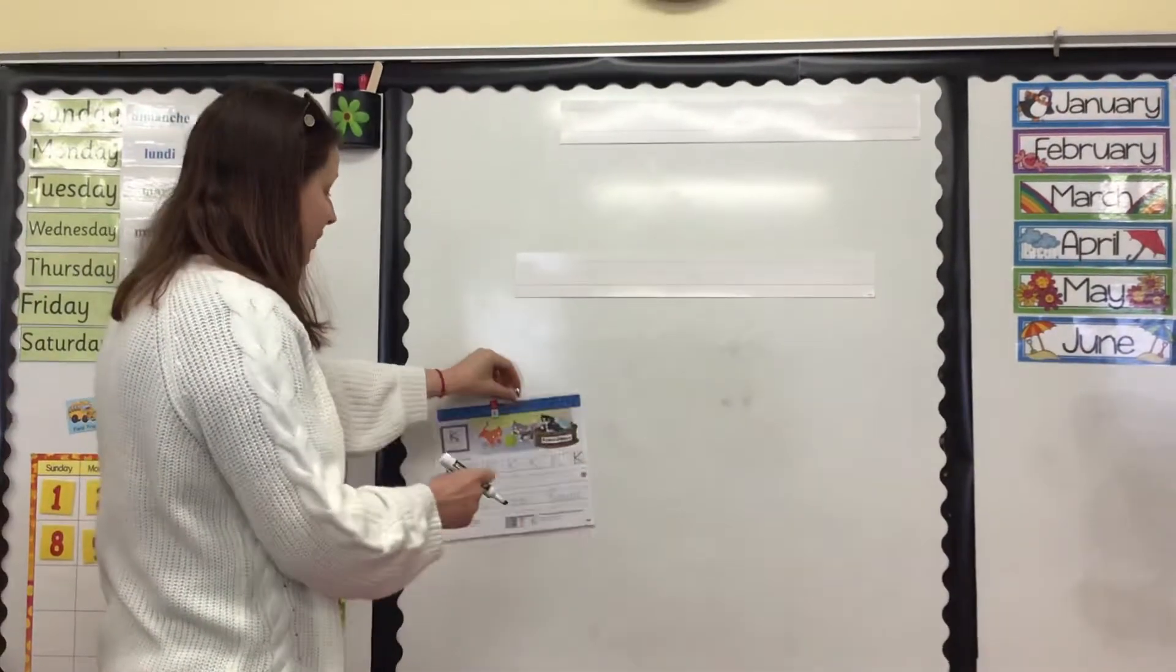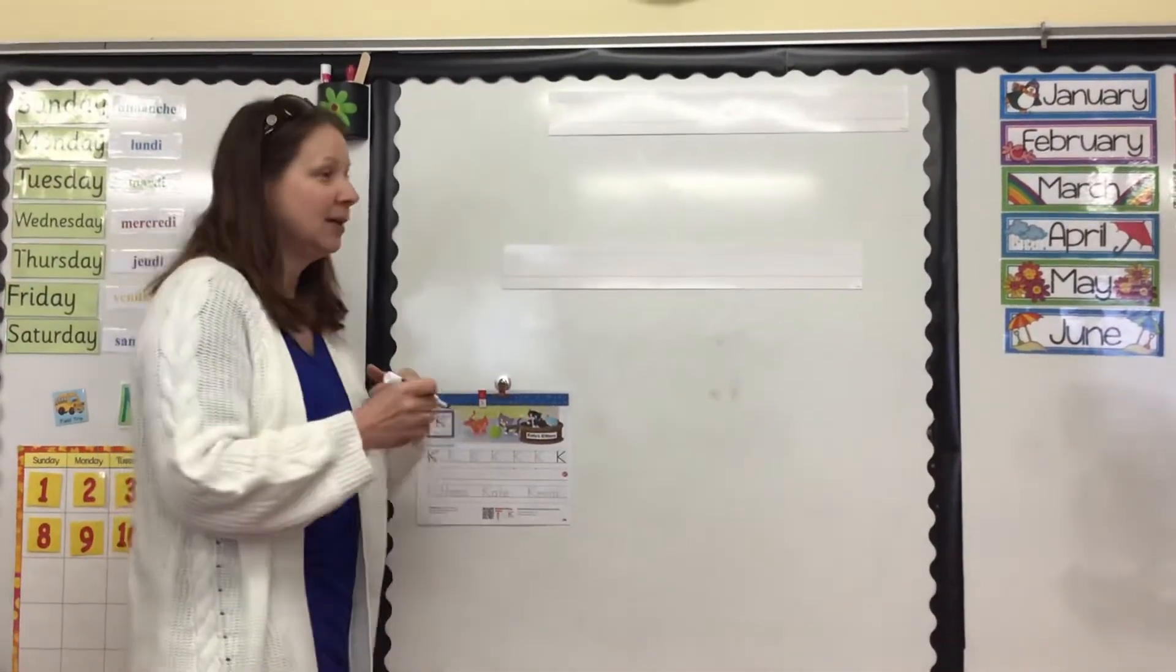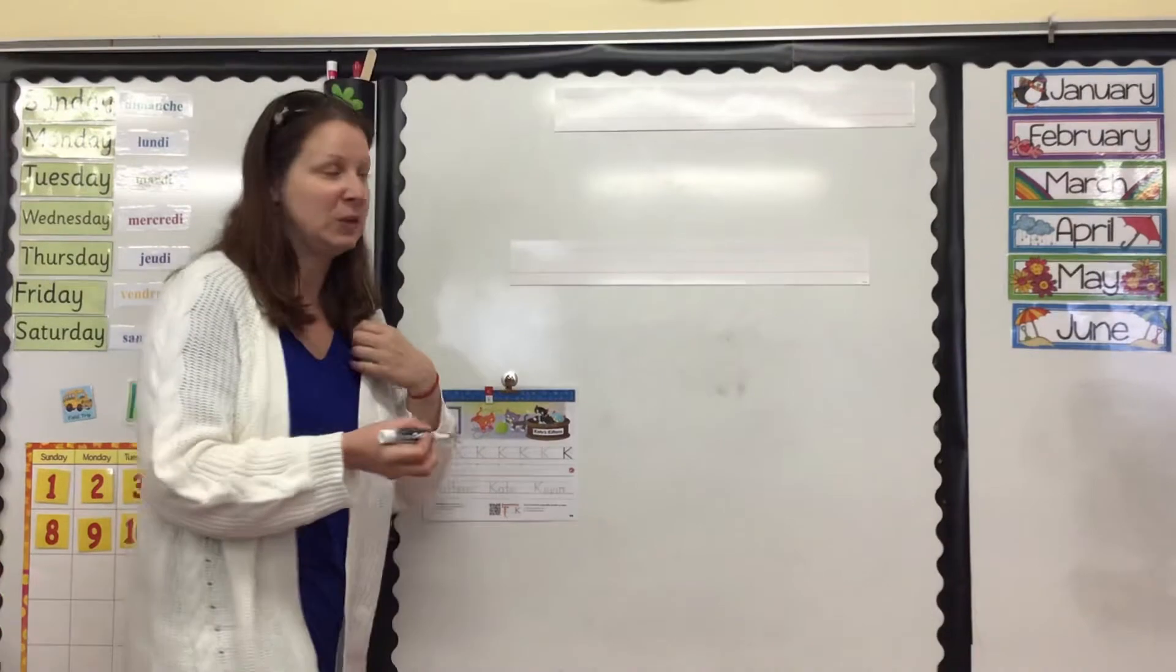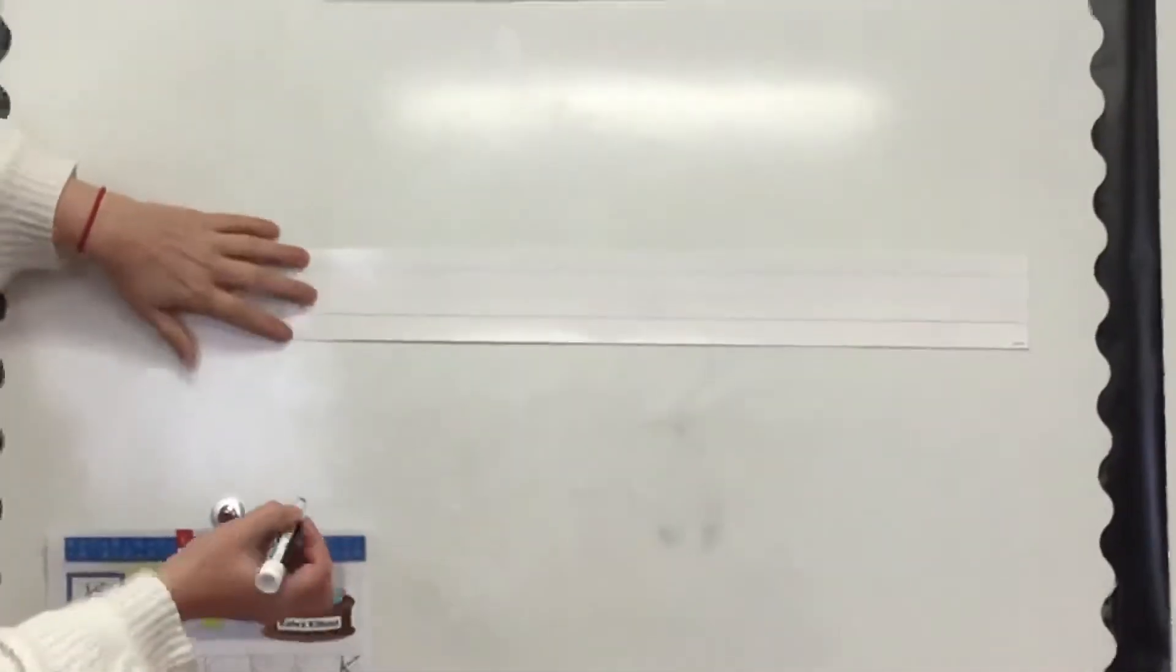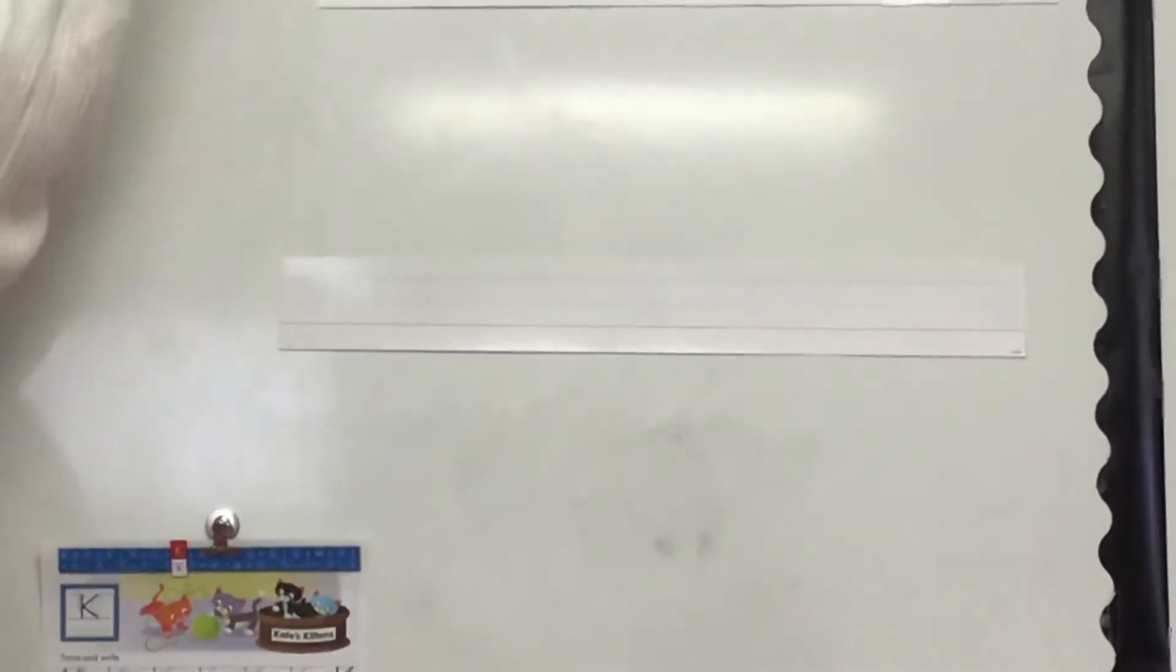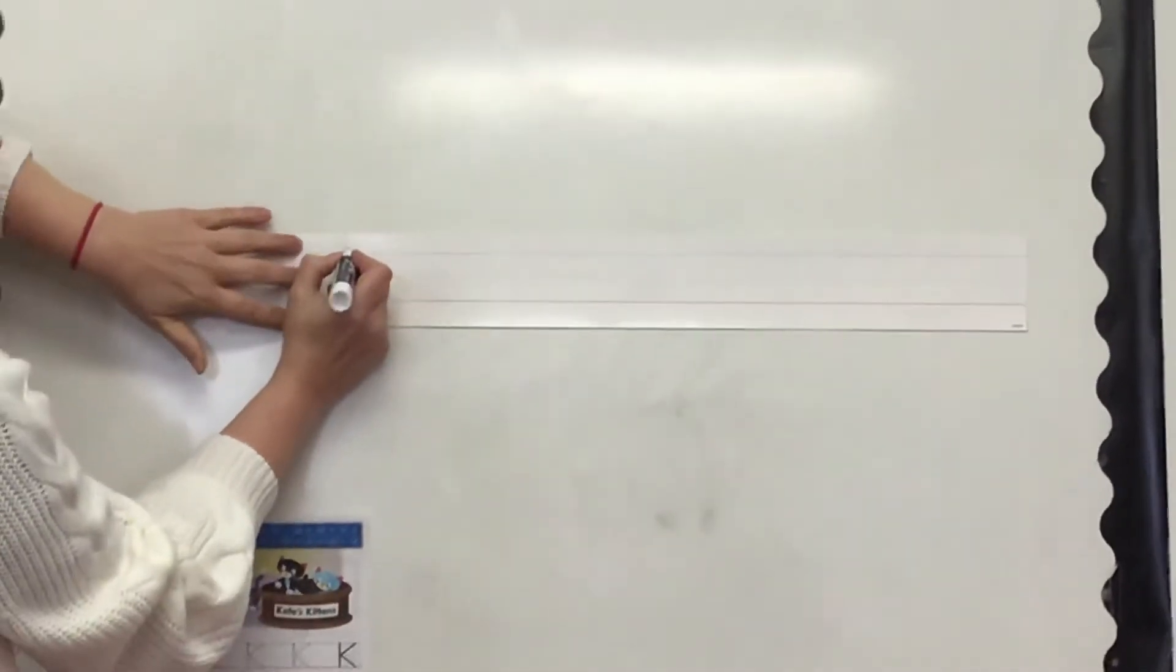This letter can be a little bit tricky to get all the lines where they're supposed to be, so make sure you go slow and take your time. All of our uppercase letters are tall, so our K starts with a tall plop.